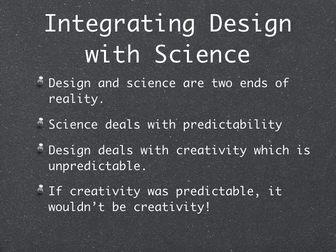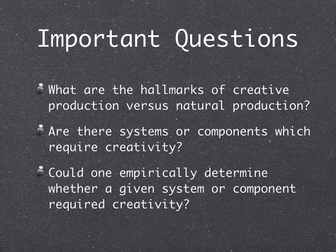It's difficult to integrate ideas about design with ideas about science — they're really on opposite ends of the spectrum. Science deals with events that are predictable, while design deals with creativity, which is unpredictable. If creativity were predictable, it wouldn't be creativity. Some important questions to keep in mind are: What are the hallmarks of things produced by creative minds versus things produced by nature? Are there any systems or components which require creativity? And could one empirically determine whether a given system or component required creativity?